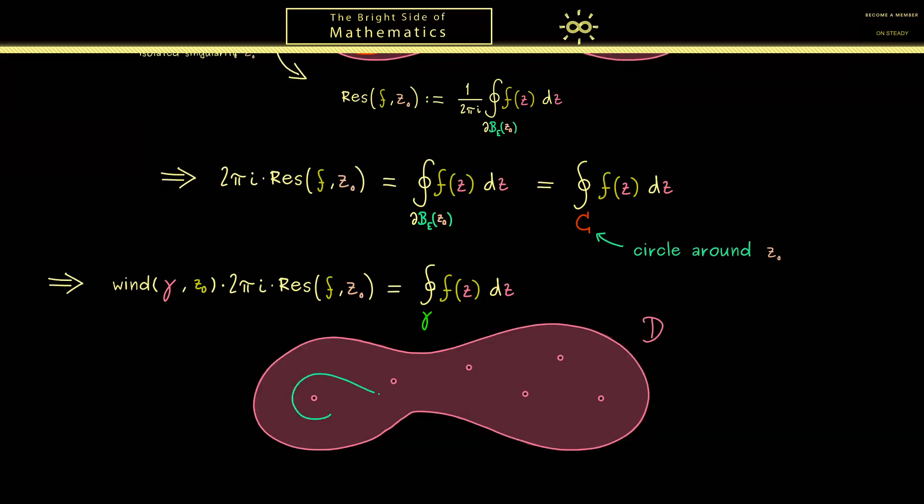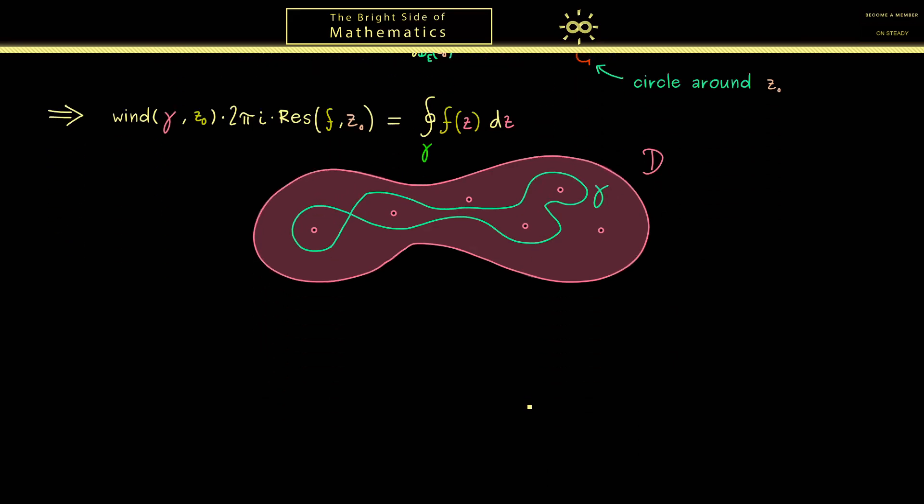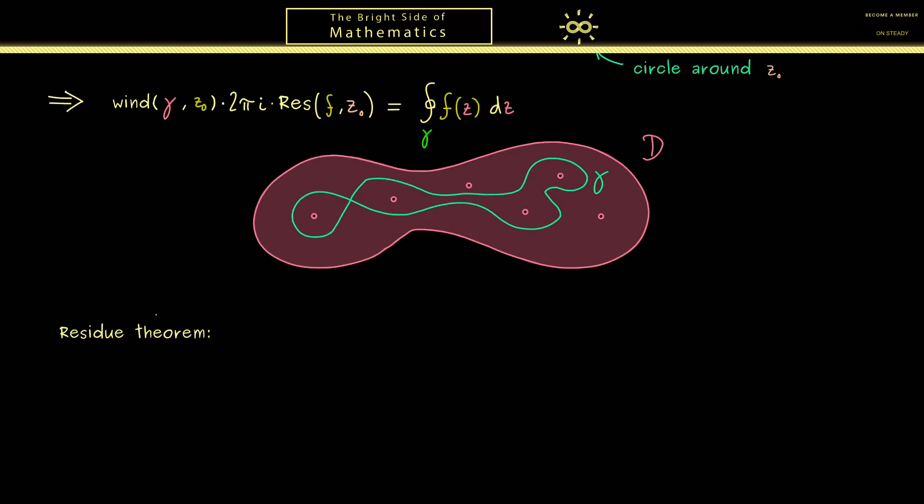It simply tells us that the closed curve integral is completely determined by the isolated singularities of the function f. So you see this is a very nice fact we can use a lot and therefore I want to formulate it immediately in the general version. However for the proof soon we will simplify this a little bit. Okay but first let's write down the necessary assumptions we need here.